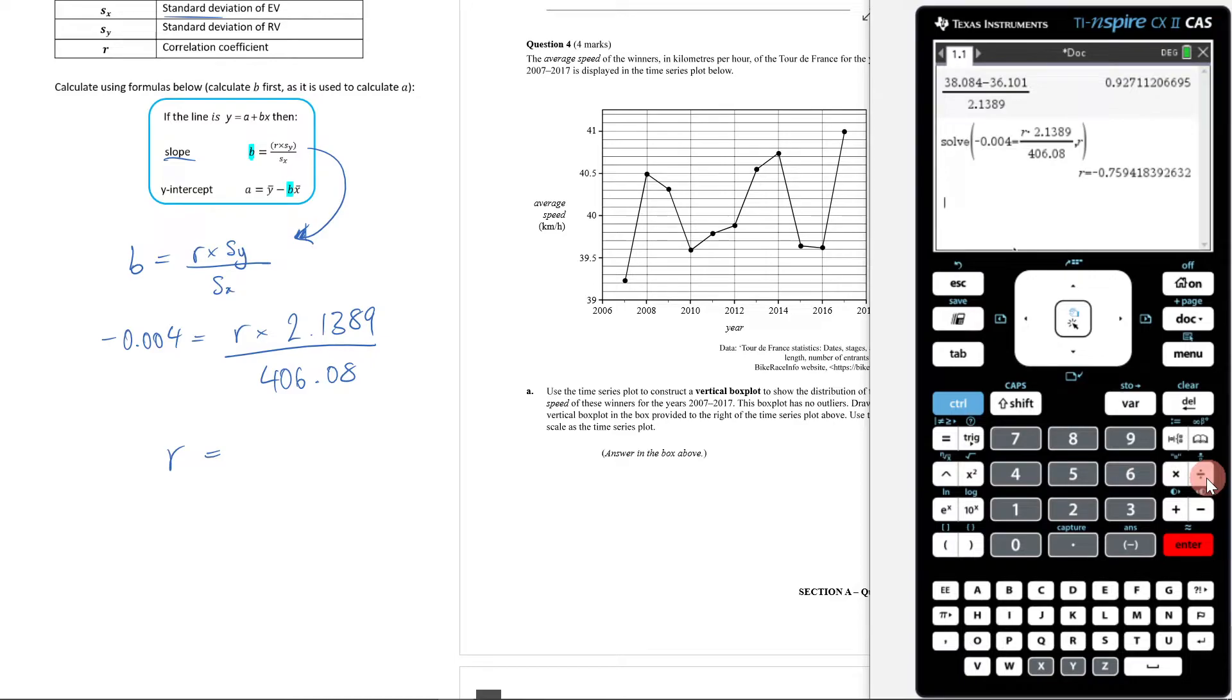So that means I'm going to get negative 0.759.